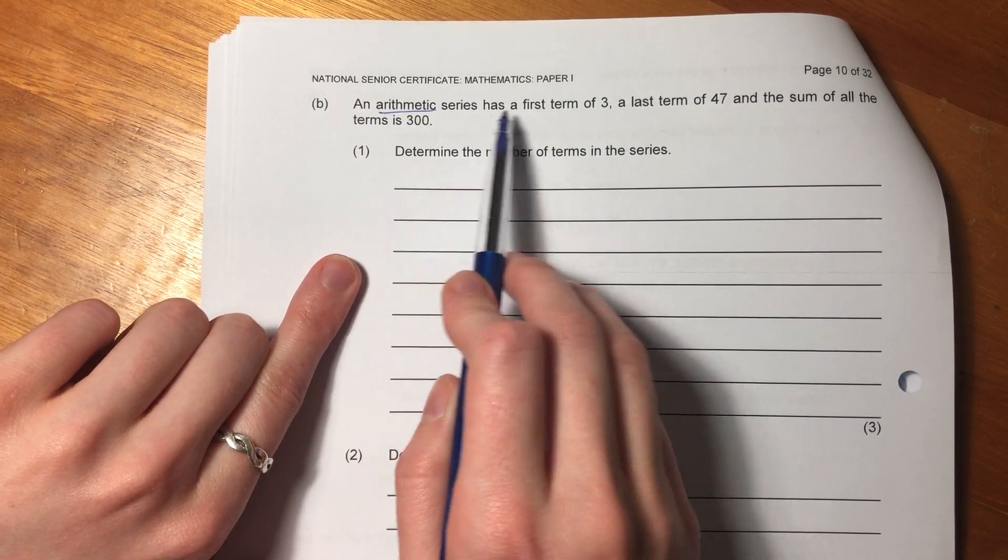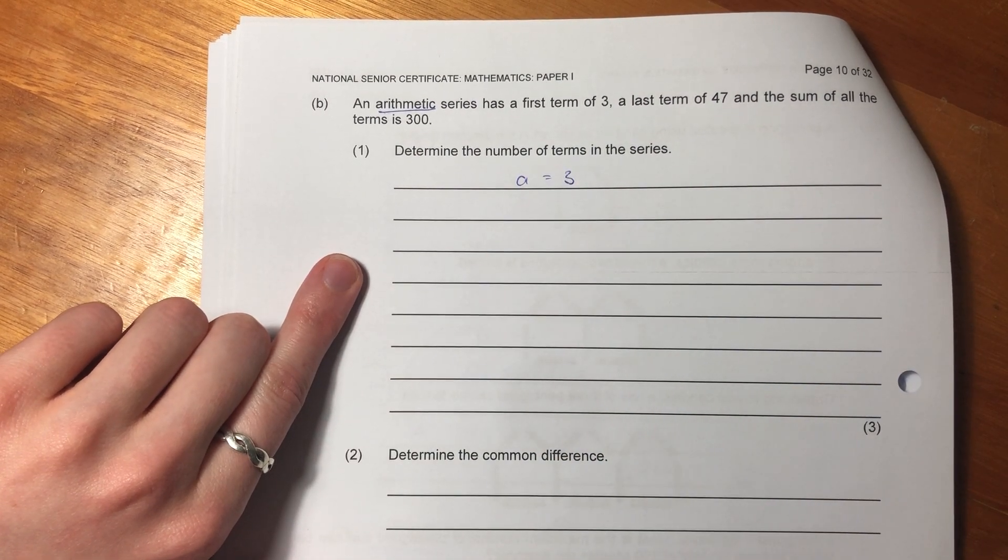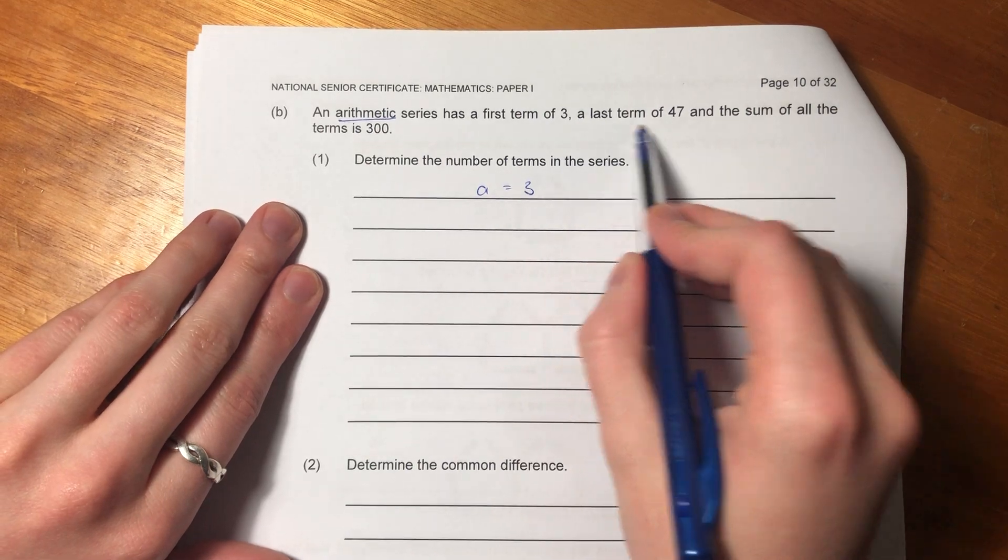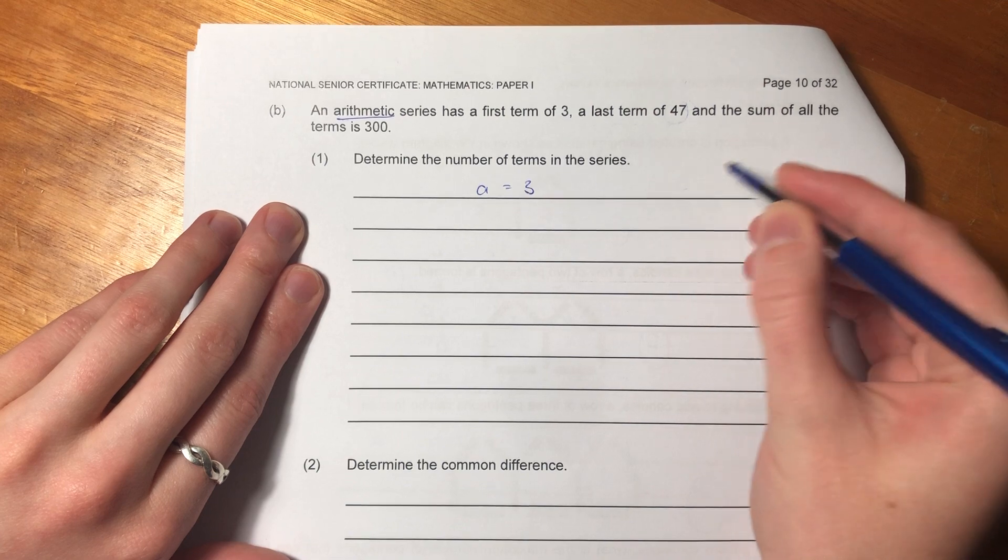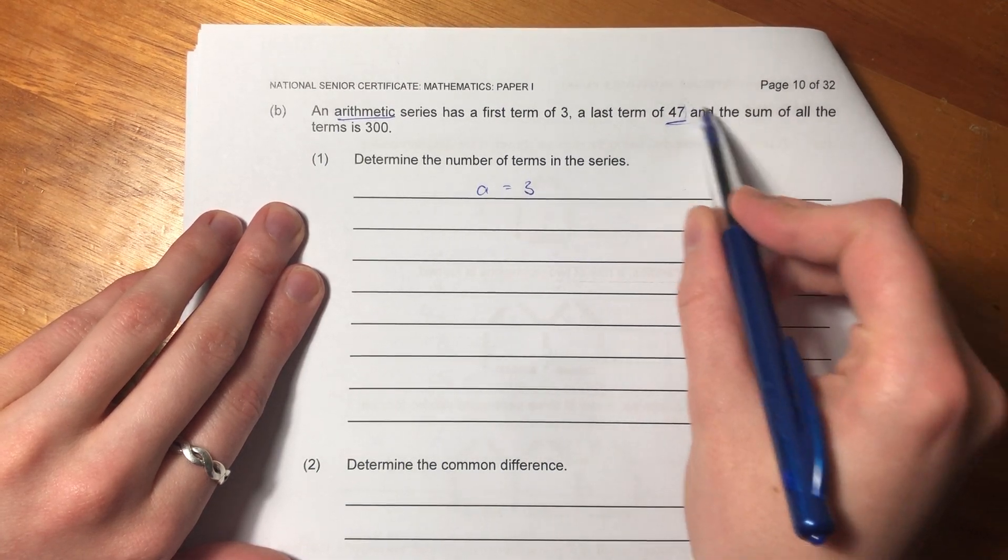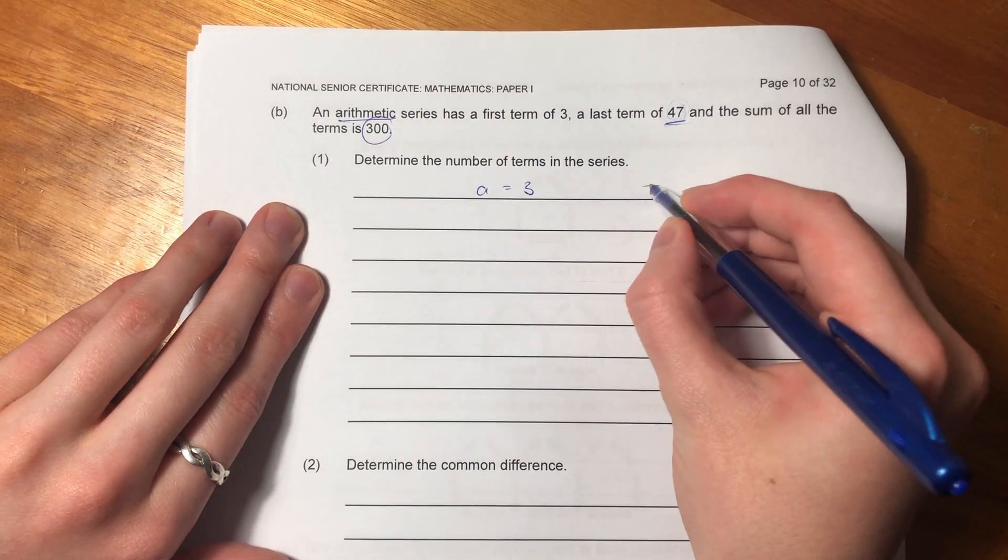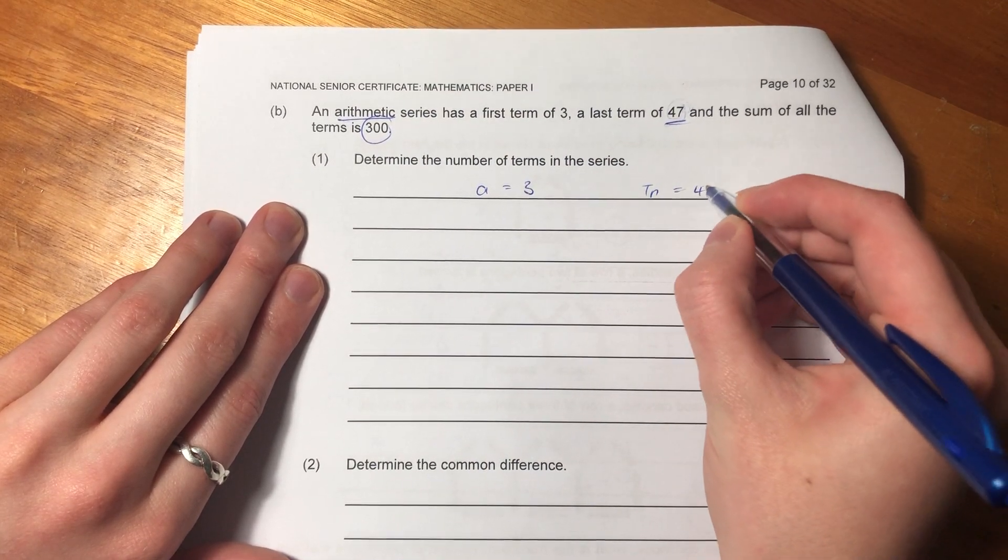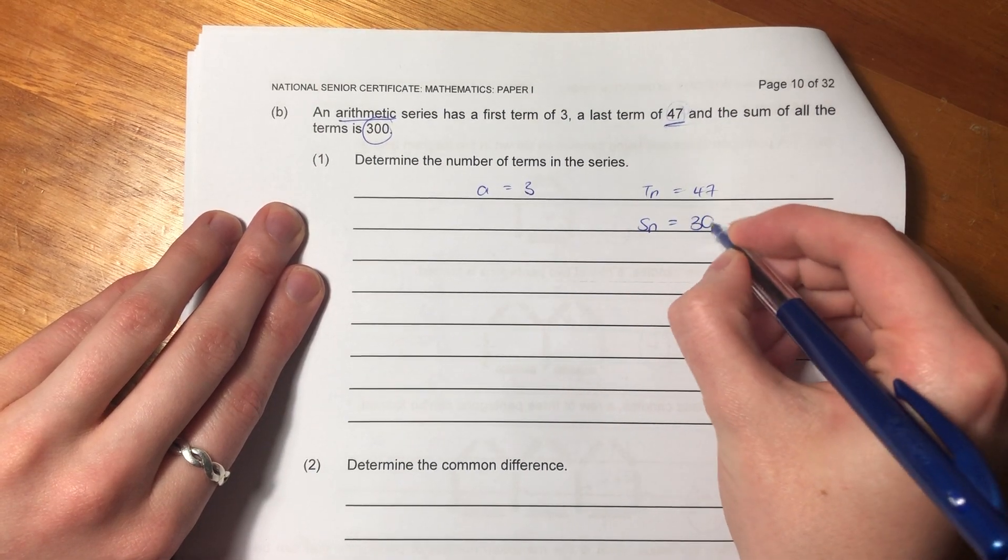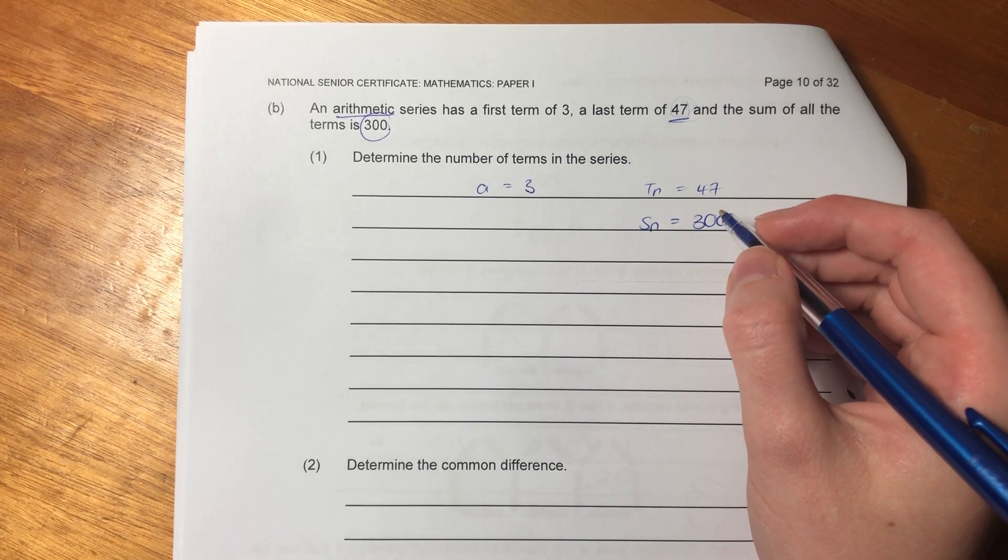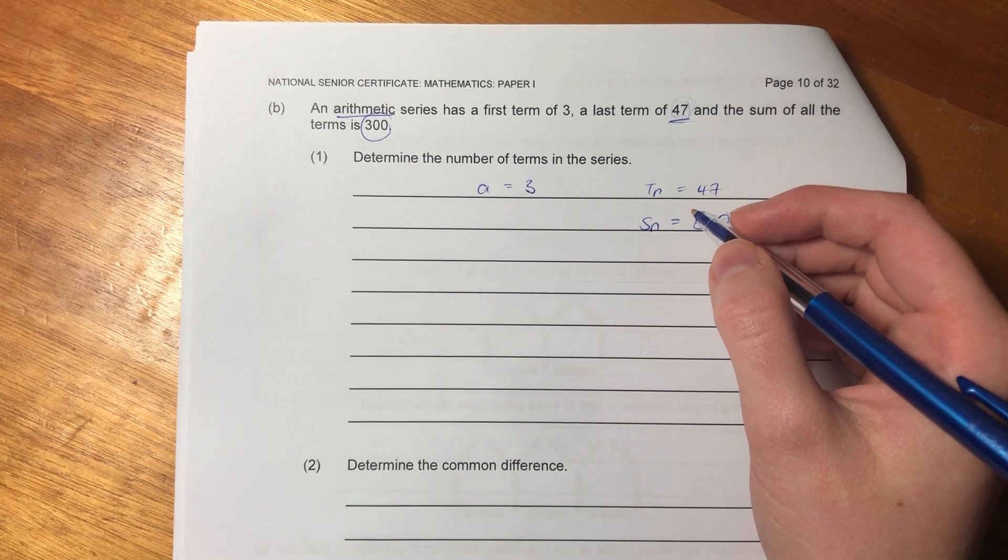So an arithmetic series has a first term of three. So we know that A equals three. Write down the information you're given as you read it. A last term of 47. So we know that. We don't really know how many terms there are, but we know that the last term is 47. So I don't really know how to write that yet. And the sum of all the terms is 300. So we kind of know that TN equals 47 and SN, I'm just going to make it N because we don't know how many terms there are, equals 300. That's kind of what we know.